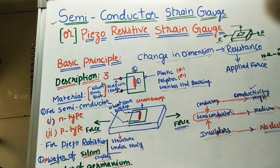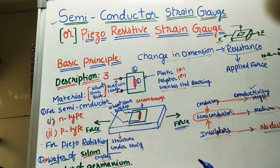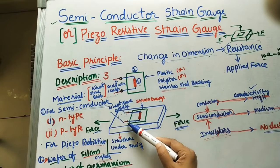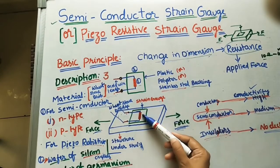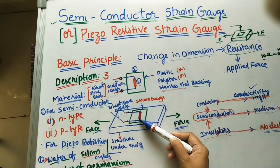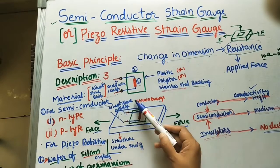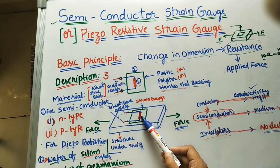Apply force at both sides of the structure. Because of the applied force, the length of the structure increases and the width and thickness get reduced — the structure gets strain. Because the structure gets strain, the strain gauge also gets strain and changes its dimensions. Because of this strain, the resistance of the material — or its resistivity — also changes. The Wheatstone bridge, connected here, gives the change in resistance of this material.